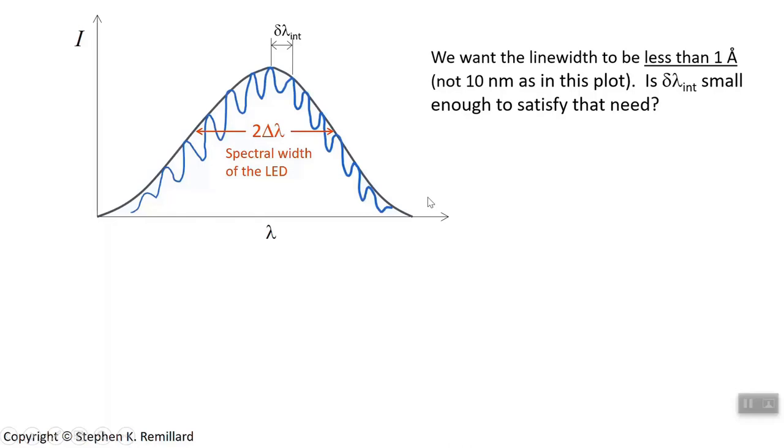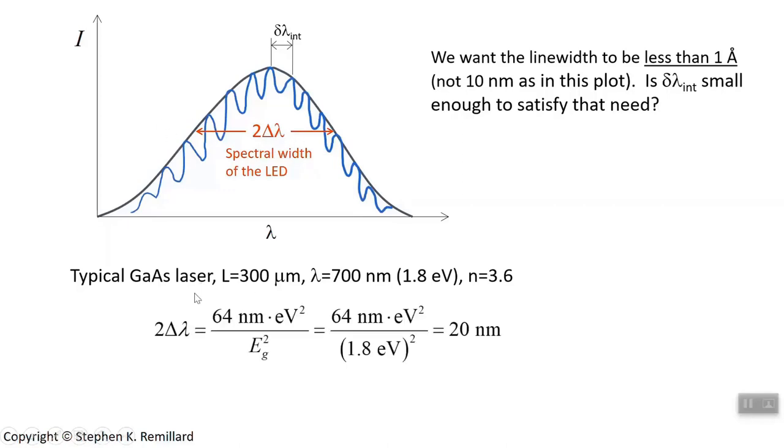For a laser, you want it to be sub-angstrom, preferably under 100 picometers, not 10 nanometers. Let's do a quick back-of-the-envelope calculation for a typical gallium arsenide die: length of 300 microns, wavelength of 700 nanometers, and n is 3.6. We came up with an expression that the width is 64 nanometer electron volt squared divided by the bandgap squared. Bandgap for gallium arsenide is 1.8, so put that in and you calculate 20 nanometers. This spectral width from the LED is about 20 nanometers wide. That's too wide.